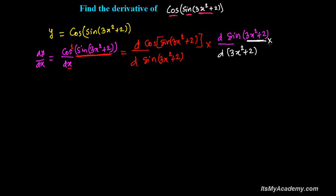Again, since we introduced 3x squared plus 2 by the chain rule, we have to multiply by it as well. Now we can differentiate 3x squared plus 2 easily with respect to x, because x is the main variable here — it is a simple algebraic function.